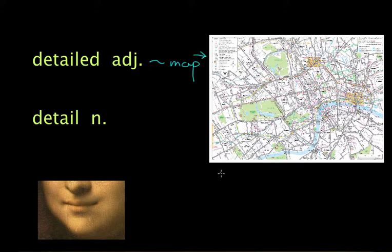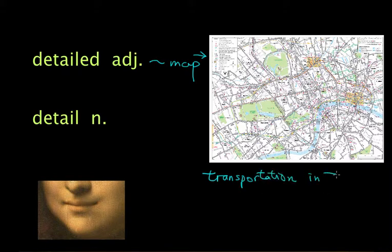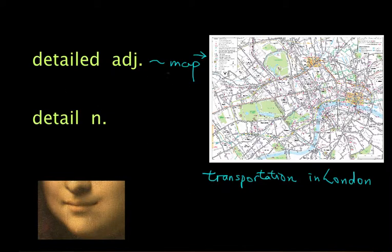There's a lot of information in there because it is a detailed map of the transportation in London. That includes maybe the tube and the buses and all sorts of these things. So that's why there are a lot of details, and it's detailed.